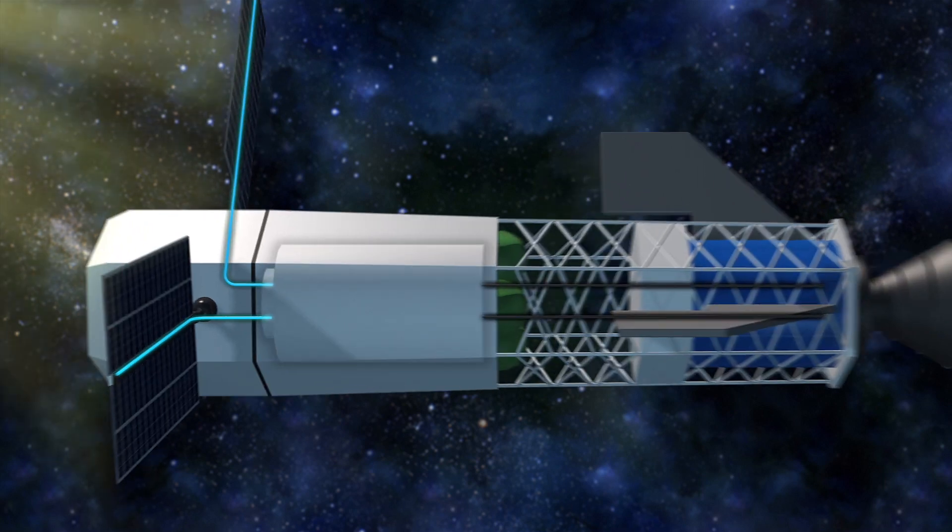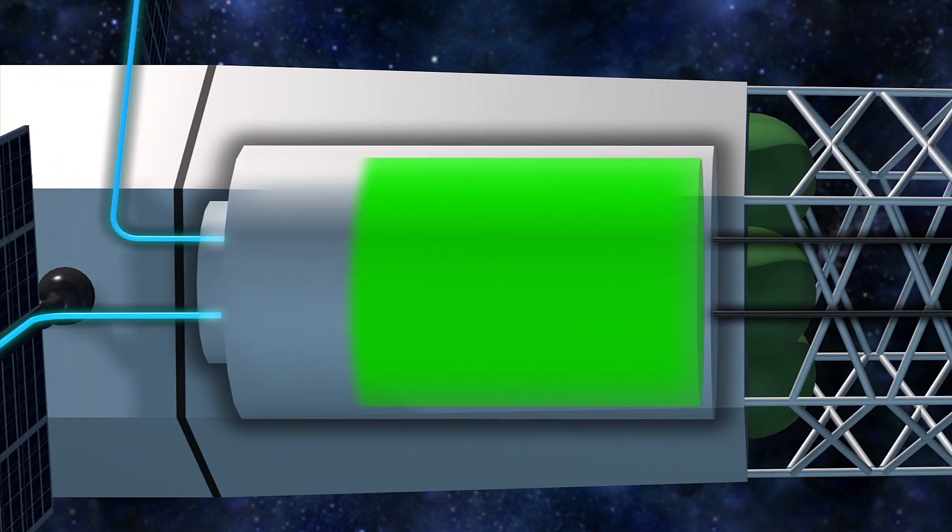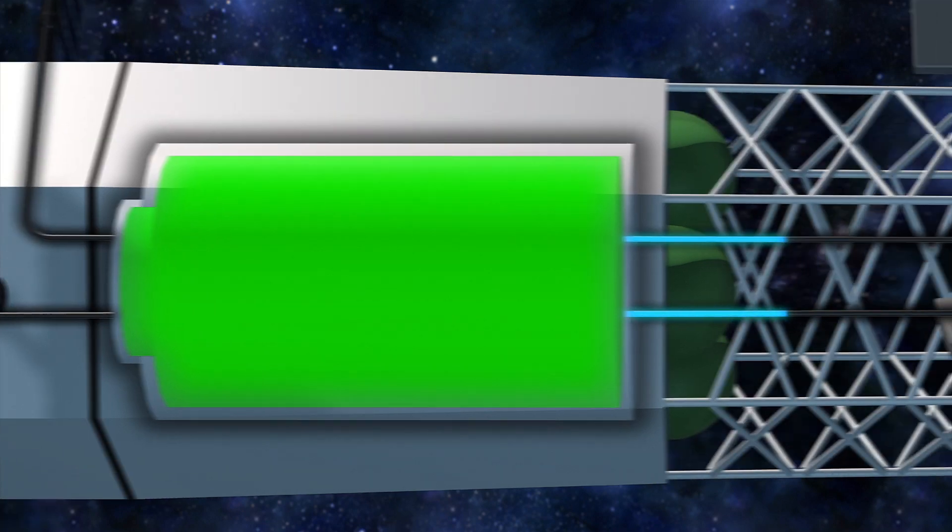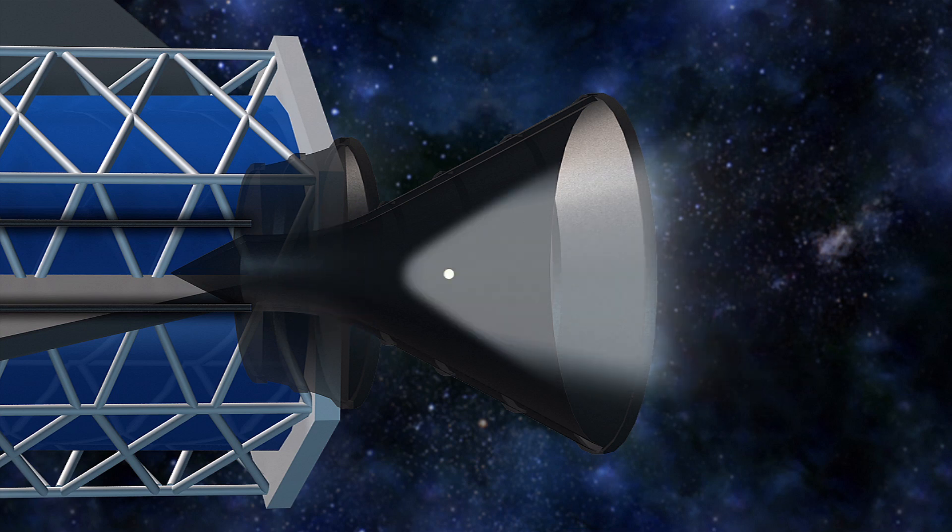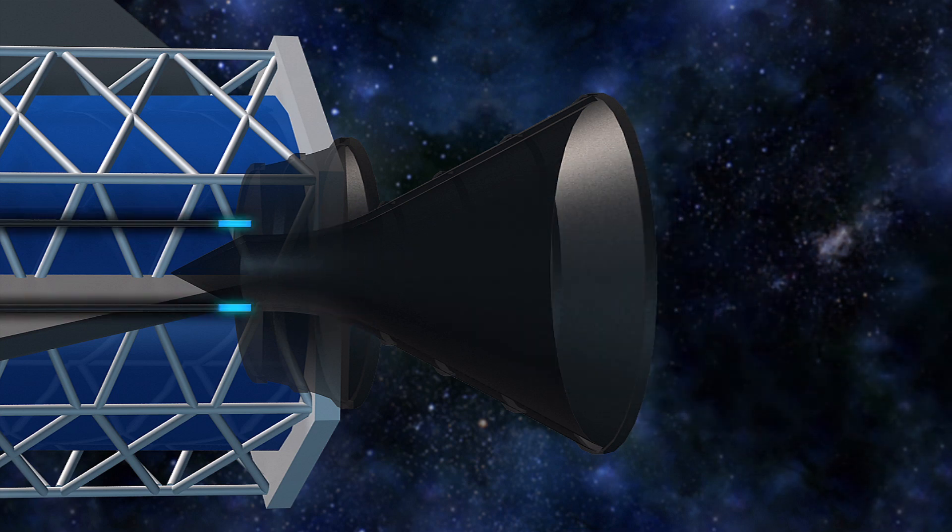Solar energy will provide electricity needed to charge the capacitors, which then power the fusion rocket's magnets. For each pulse of the rocket engine, powerful magnets crush a series of lithium metal rings around a ball of tritium-deuterium plasma.